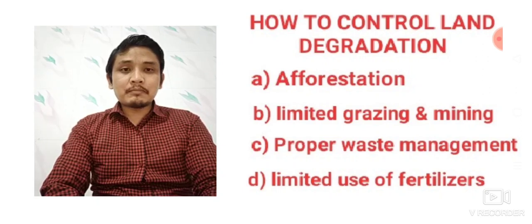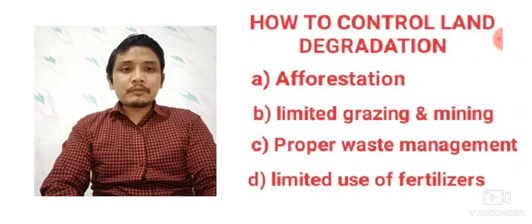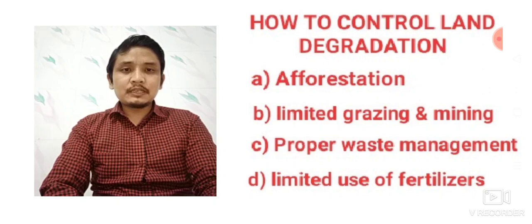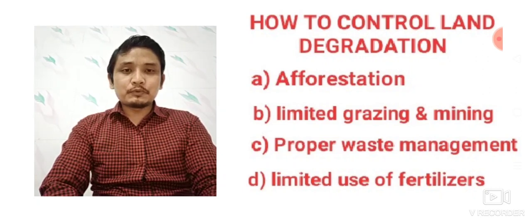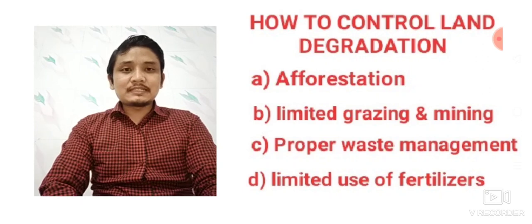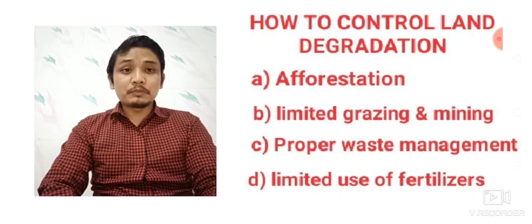Grazing and mining can be practiced on a limited scale. Number three: proper waste management. We can manage waste, especially from factories, industries, and houses. Different types of poisonous or chemical elements are discharged or disposed of everywhere, so we can properly manage their disposal to control land degradation.